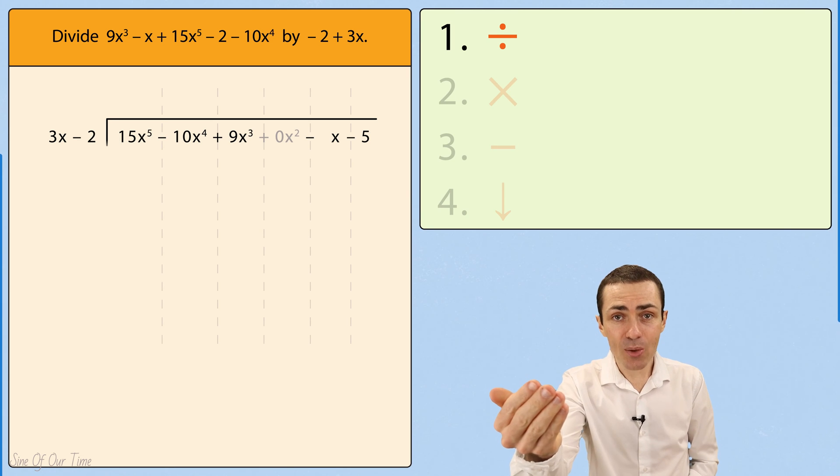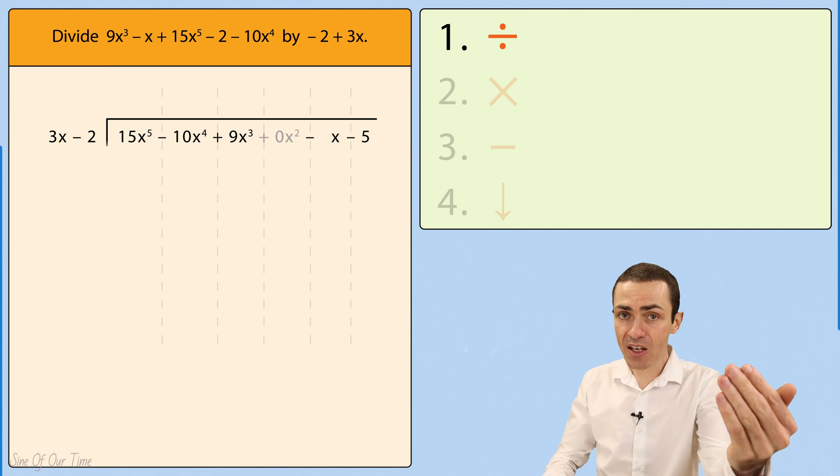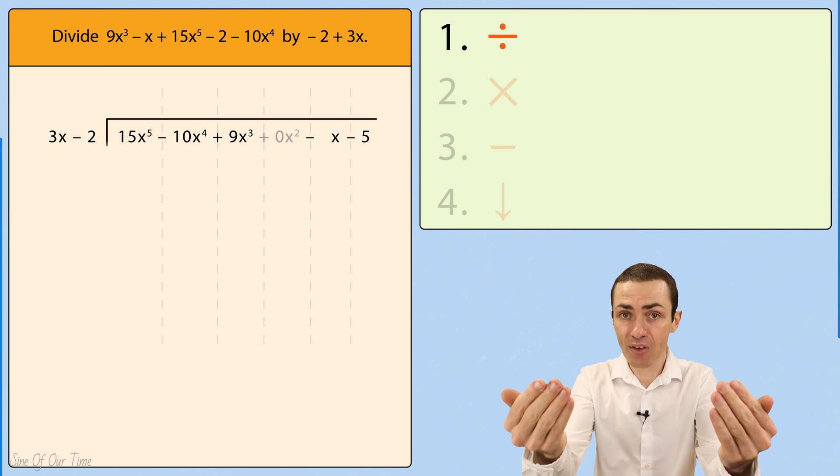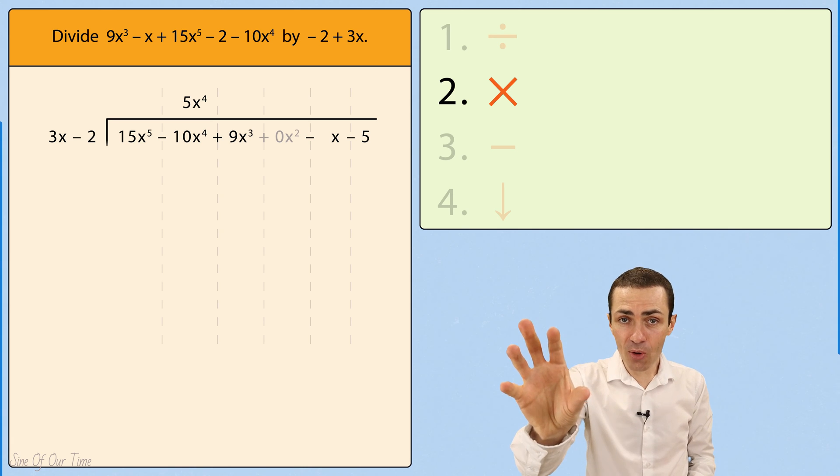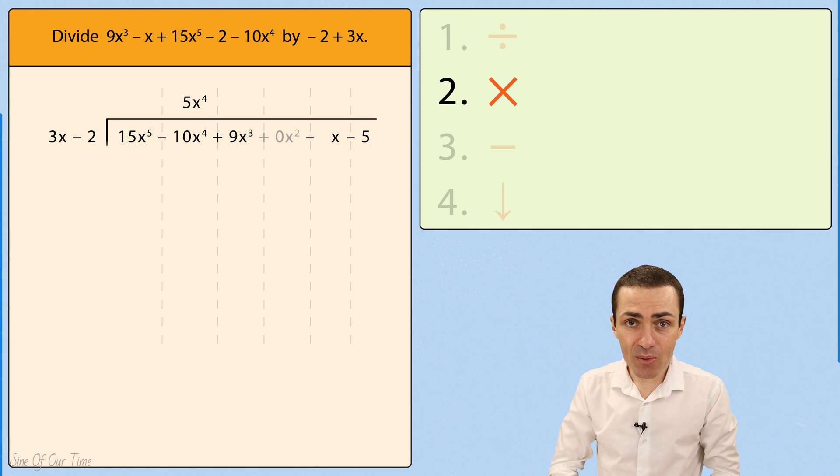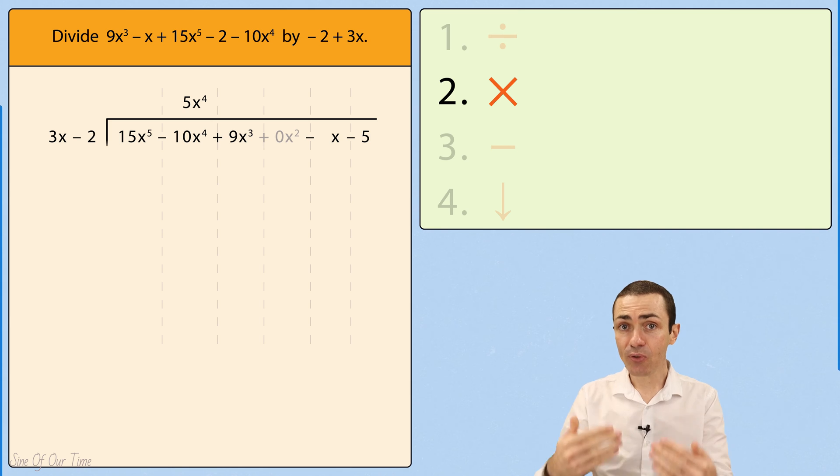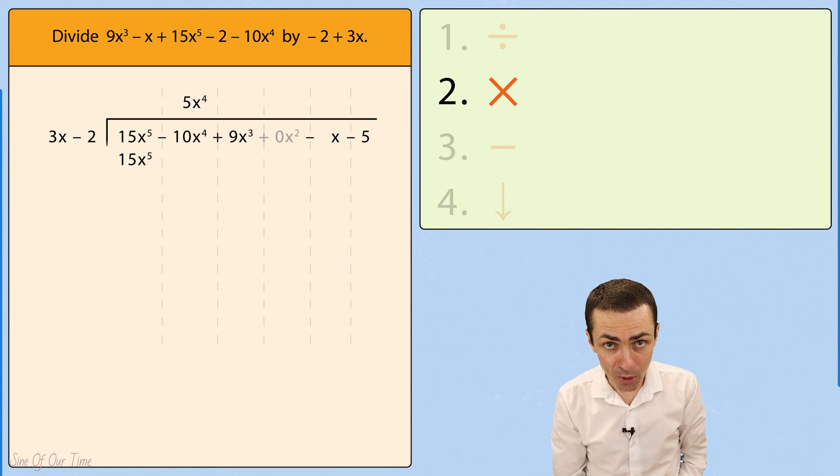Starting with 15x to the power of 5 divided by 3x, which gives us 5x to the power of 4. We take that 5x to the power of 4, and we multiply by 3x minus 2, which gives us 15x to the power of 5 minus 10x to the power of 4.